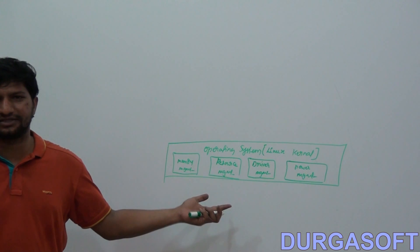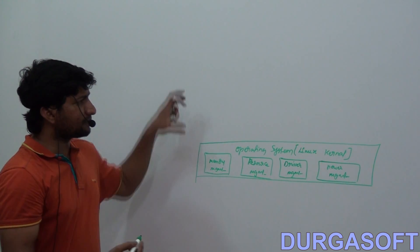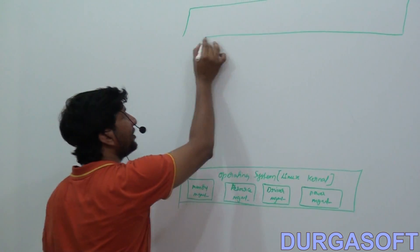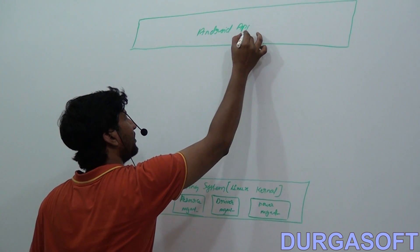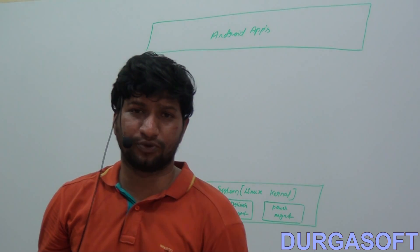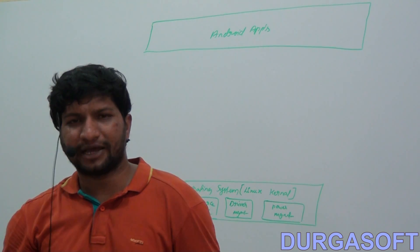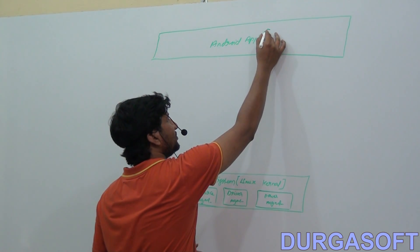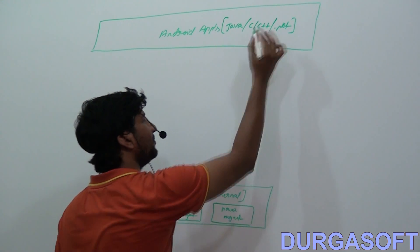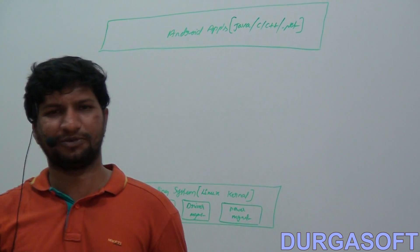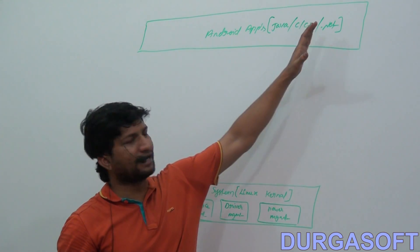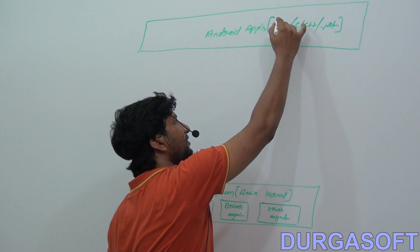In the Android platform, Linux kernel is the operating system. The first component in Android architecture is Android applications — also called the software component. People often ask which programming language is used to develop Android applications. You can develop Android applications using Java, C/C++, or .NET. However, initial versions of Android supported C/C++ and .NET, while the latest versions of Android support only Java.